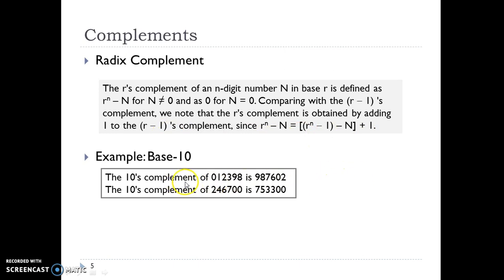We will take the example of a decimal number system again. We have to find the 10's complement of the number 012398. To find the 10's complement we first find the 9's complement of this number and then add 1. Finding the 9's complement is easy — we just subtract each digit from 9. So 9 minus 8 is 1, plus 1 is 2. We add 1 only to the rightmost digit, giving 2, then subtract each remaining digit from 9: 9 minus 9 is 0, 9 minus 3 is 6, and so on. Likewise for the second example, we find the 9's complement first and then add 1.